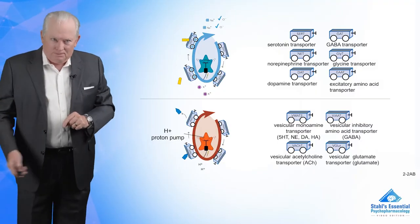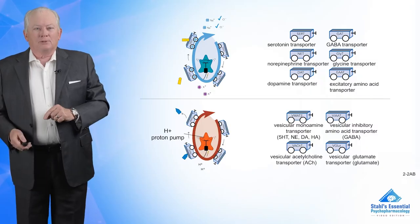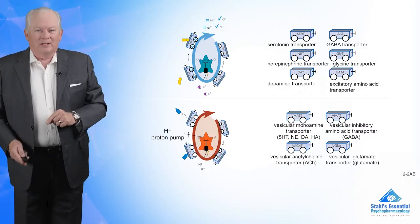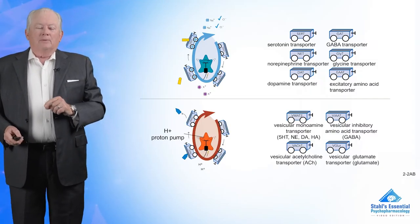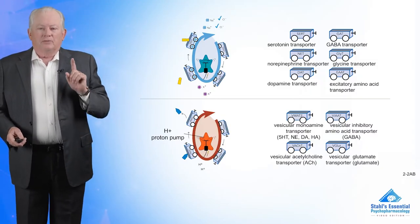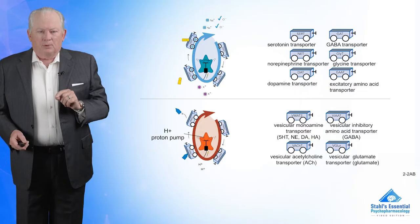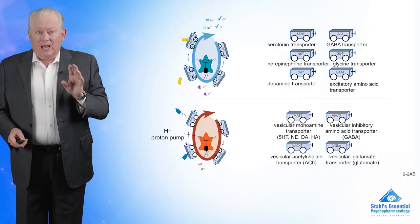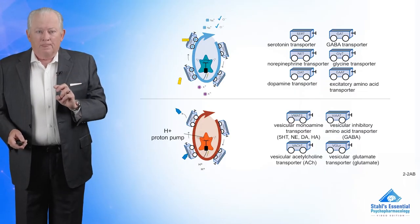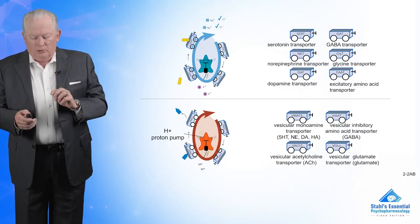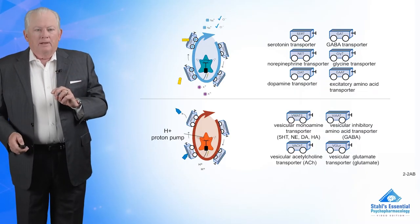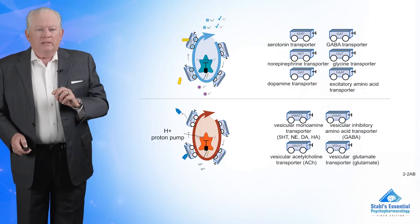The energy created by having a gradient of sodium is used by the pump to put serotonin in while sodium leaks out — the pump just pumps sodium back out again. These transporters at the bottom are different: these are vesicle transporters, located on your synaptic vesicles, and they are basically a proton pump.